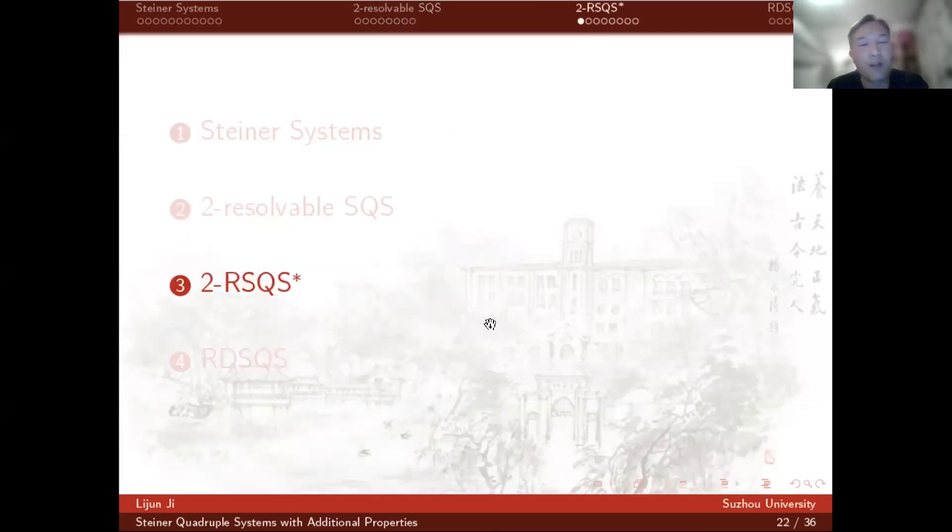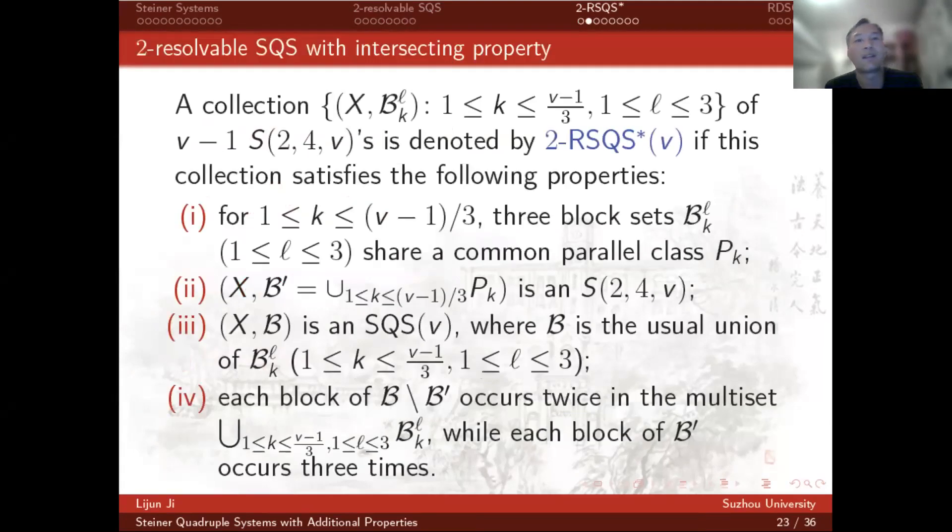Lu and Zhu asked whether there is a 2-RSQS(v) for v equals 4 modulo 12. Recently, we introduced 2-RSQS with a star. A collection of v minus 1 BIBDs is denoted by 2-RSQS(v) with star if this collection satisfies the following four properties.